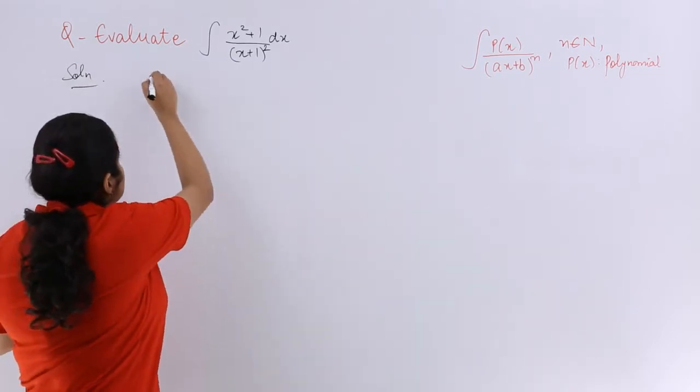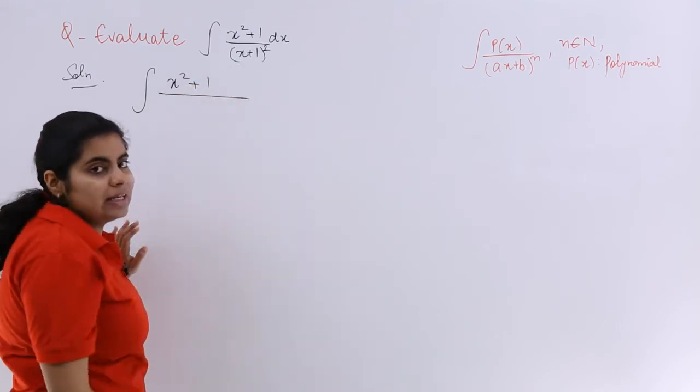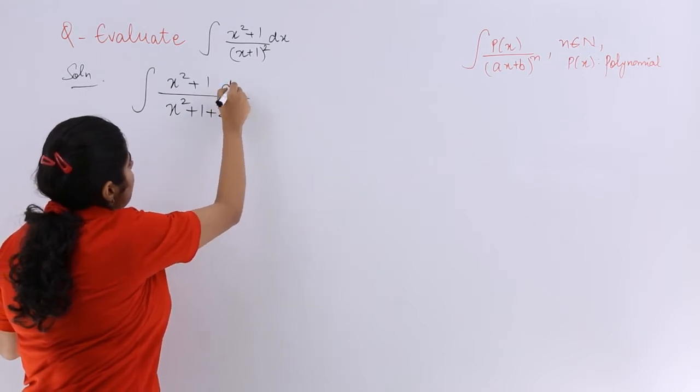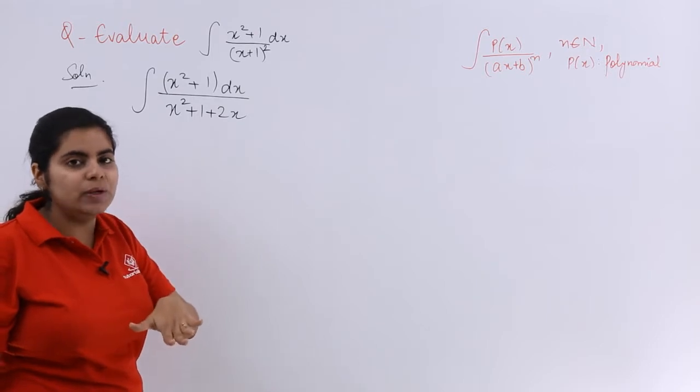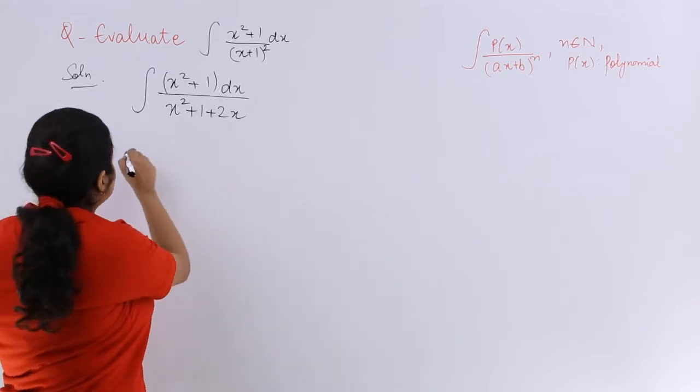So what is the question like? It is nothing but x² + 1, and in the denominator it is nothing but x² + 1 + 2x, and we have dx somewhat like this. Now what is not there in the numerator which is in the denominator? That is 2x. No issues, because we can always introduce 2x.